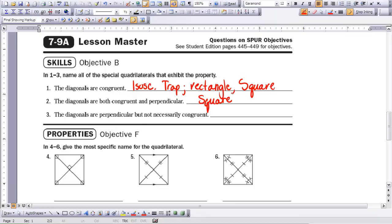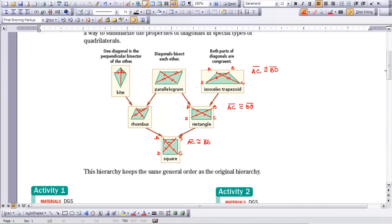I'm going to go back up to that picture in the hierarchy. So here we look. These are all the shapes that have diagonals that are congruent. And then in this side, this is all the ones that have perpendicular bisectors.